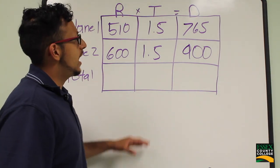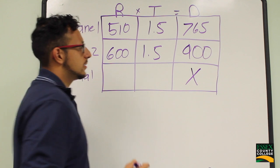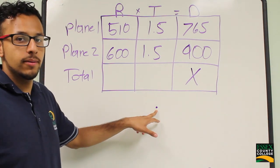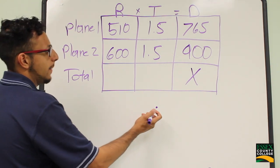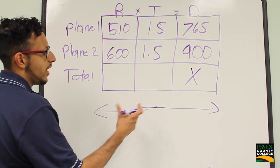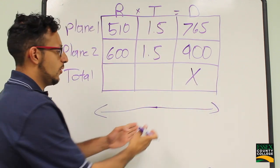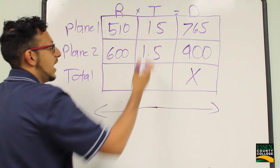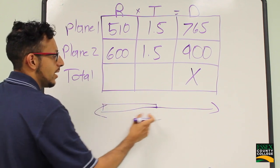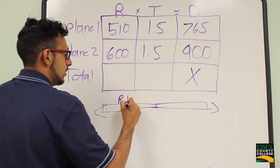The question asks how far apart they would be, so we are looking for the total distance. If we draw this out, both planes start at the same point and fly in opposite directions — the first plane goes one way and the other goes the opposite direction. So in this problem, we are just finding the total distance after they both fly for 1.5 hours, because they both fly at the same time.